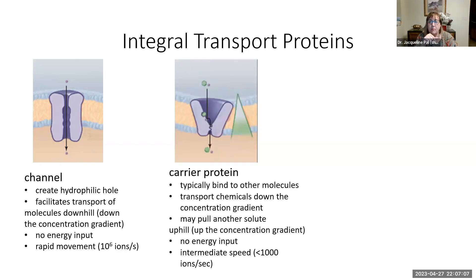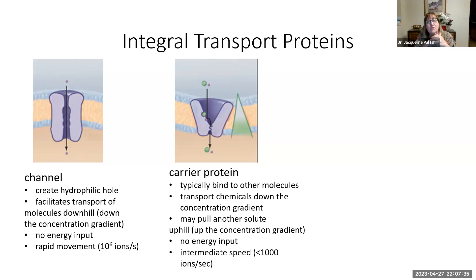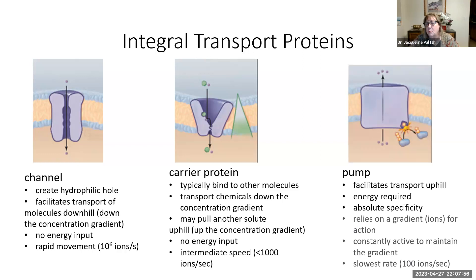In contrast, we have what's called a carrier protein. They also carry substances down their concentration gradient, so there's no extra energy needed — they just use the energy from the difference in concentrations. Sometimes they may pull another solute with them; that other solute was going uphill, but there's enough energy in the downhill molecule to pull it along. These have an intermediate speed of around a thousand ions per second.